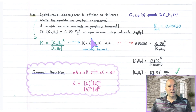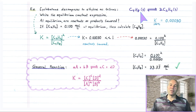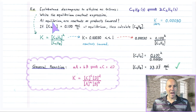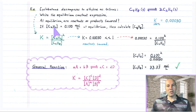Here's another example. Cyclobutane decomposes to ethylene: C4H8 converts into two C2H4 molecules, breaking apart into two equal smaller molecules. Three questions: First, write the equilibrium constant expression. Second, are the reactants or products favored at equilibrium given the equilibrium constant provided? Third, if the concentration of C2H4 is 0.1 moles per liter at equilibrium, calculate the concentration of C4H8.